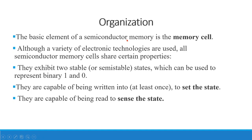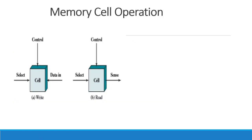To summarize: semiconductor memory's basic element is the memory cell. Memory cells have common properties — write and read operations happen. If you use a memory cell, it has three pins: Select Pin and Control Pin, plus a data terminal.